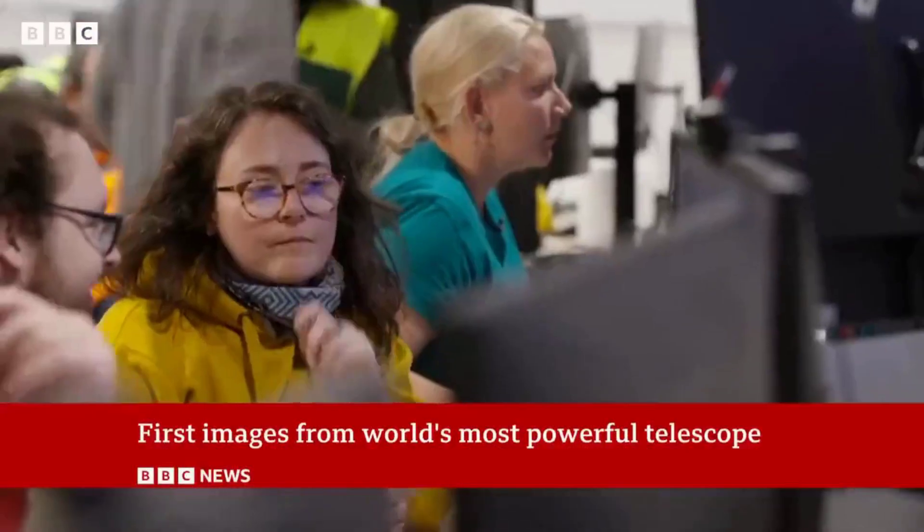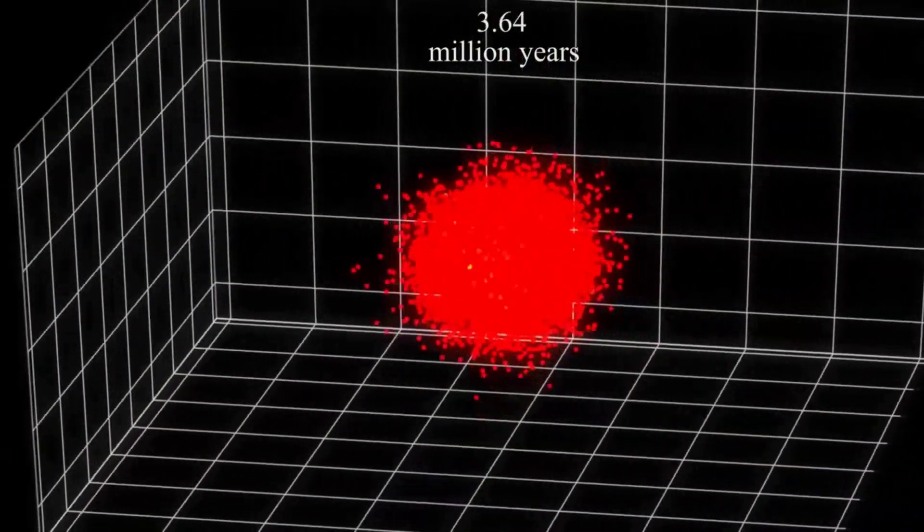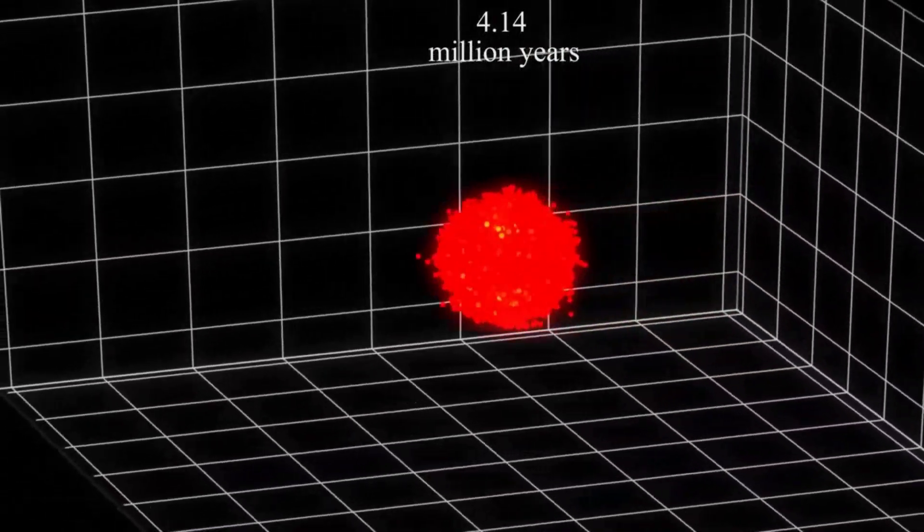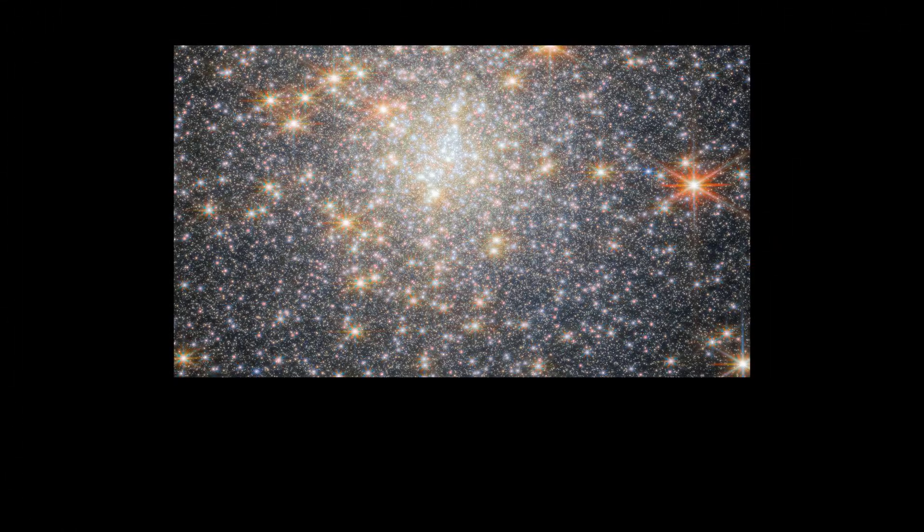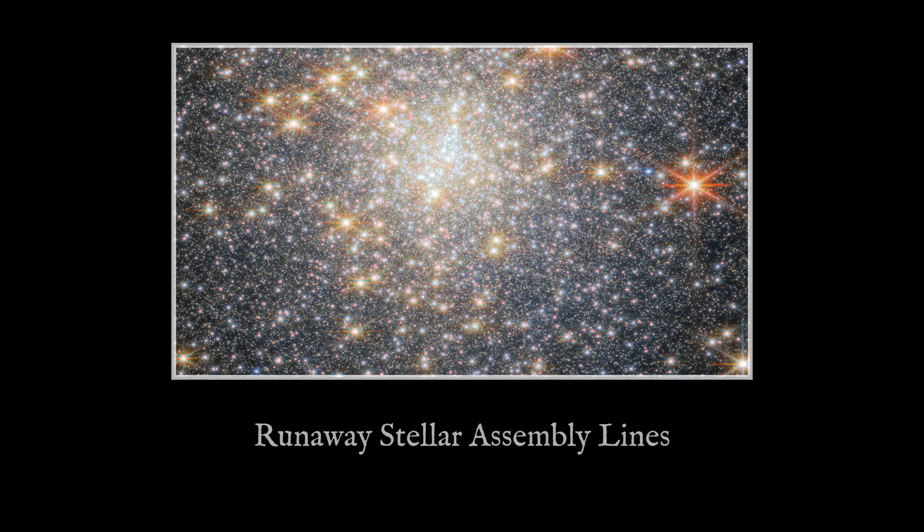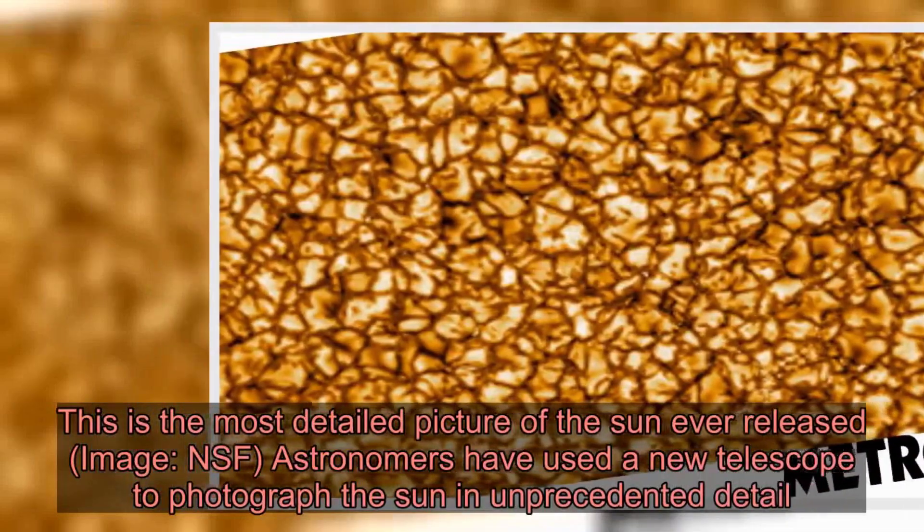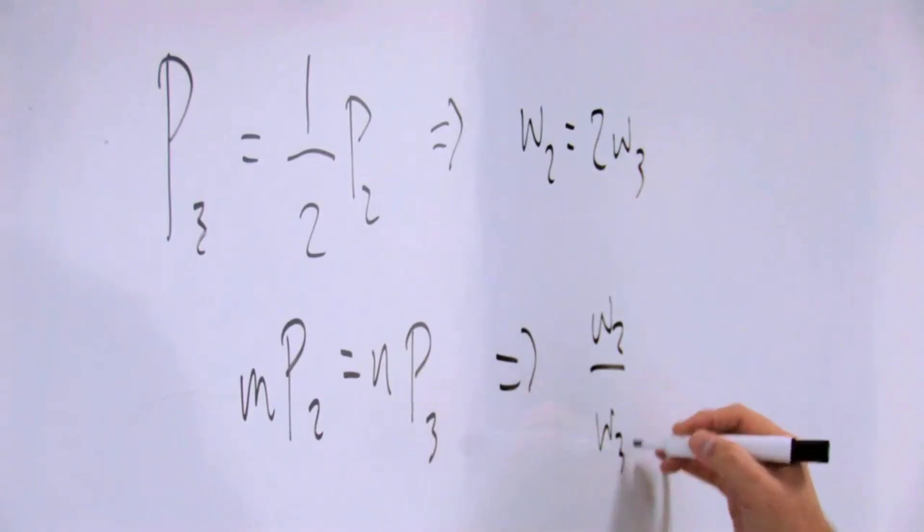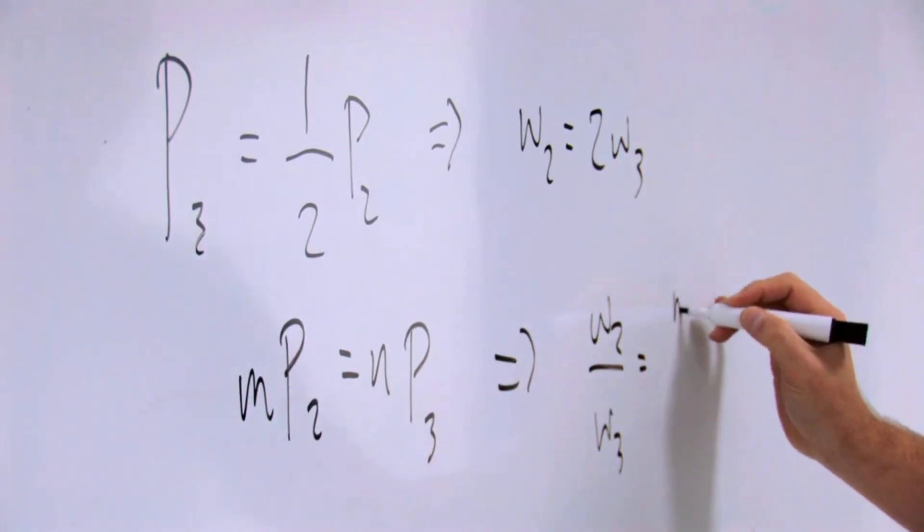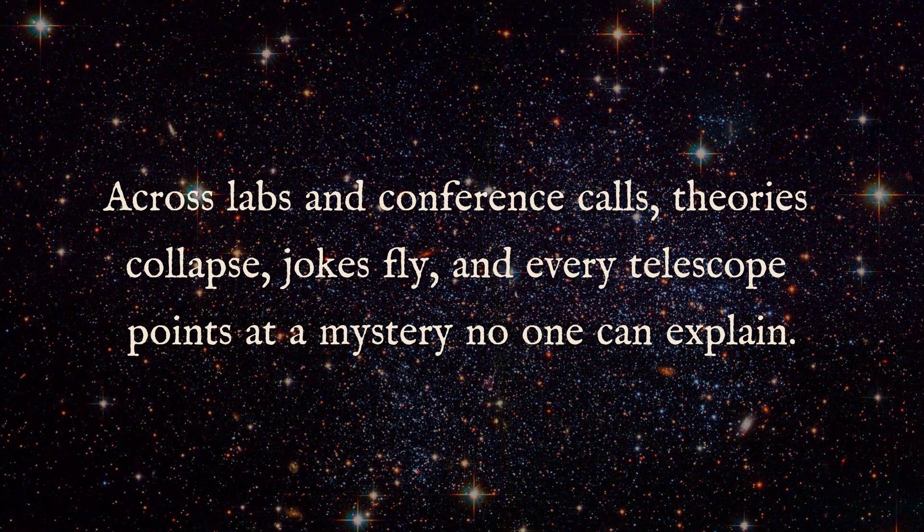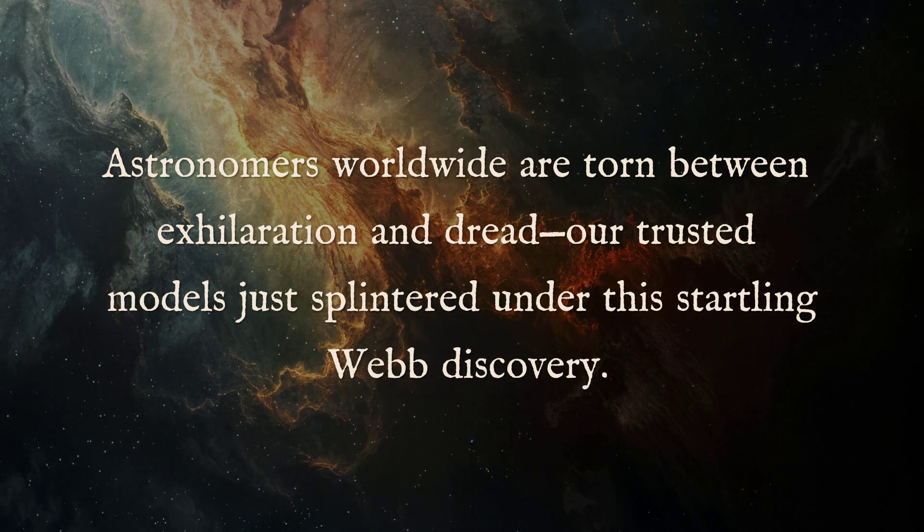A few voices tried to calm the storm. Maybe the galaxies were just forming stars with wild efficiency, turning nearly all their gas into stars instead of the slow trickle everyone expected. Or perhaps the first stars were monsters themselves, burning hotter and faster than anything around today. But even the optimists admitted the standard models were straining. "We looked into the very early universe for the first time and had no idea what we were going to find," Leja said. "It turns out we found something so unexpected it actually creates problems for science."